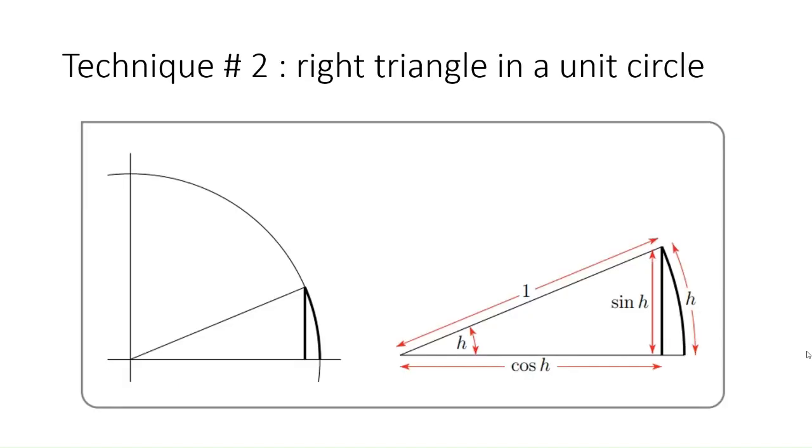Now in technique number two, I'm going to use right angle triangle inside a unit circle. So I've not shown you the whole unit circle here, but this arc is the arc of a unit circle in the first quadrant. This is a right angled triangle with points A, B, C. Let's call this point D. So now I have zoomed in over this right angle triangle here.